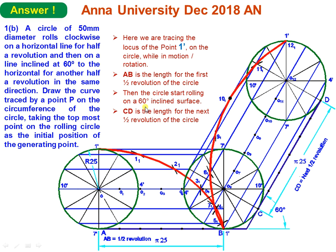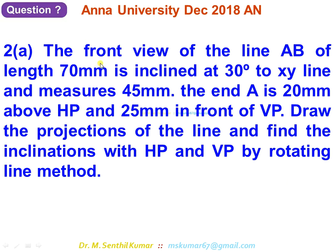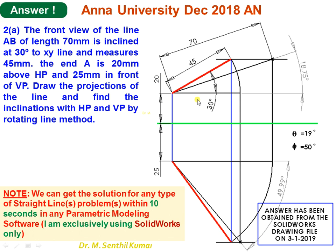Moving to the next problem, 2a: the front view of line AB of true length 70 mm is inclined at 30 degrees to the XY line and measures 45 mm in front view. Point A is 20 mm above HP and 25 mm in front of VP. Draw the projection and find the true inclination with HP and VP. I solved this using a parametric modeling software called SolidWorks, so you will see only the answer with dimensions but missing some notations.